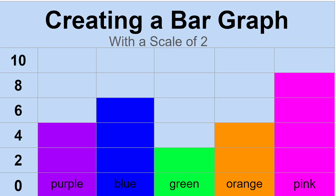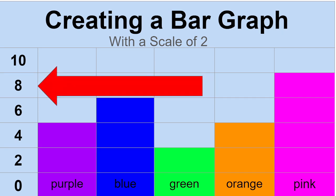Today we are going to be creating a bar graph with a scale of 2. What would it be a scale of 2? If you look on the left, you see that instead of the numbers going 1, 2, 3, 4, they actually skip count by 2: 0, 2, 4, 6, 8, 10. And that's what we're going to practice doing today.